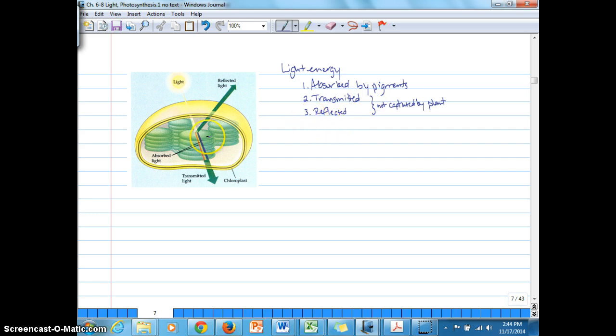But we'll talk more about what happens when there's excess light energy. But at this level, we're looking at that light energy gets absorbed, and that it's going to be absorbed by pigments. So the question is, basically, how do we know that pigments absorb light energy in photosynthesis?